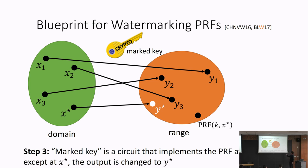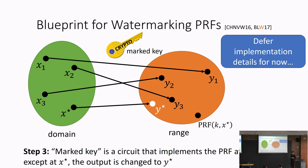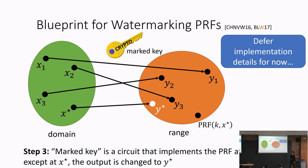For now, let's reason about the properties assuming the adversary has only black-box access to this function — not the actual code. Let's see whether it satisfies our conceptual notions of watermarking. The x1, x2, x3 are random points that are part of the watermarking key, and the verification algorithm would evaluate the target circuit at those points to recover the same set of evaluations.